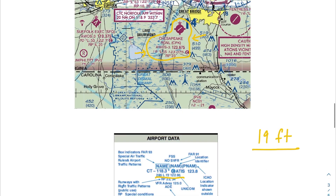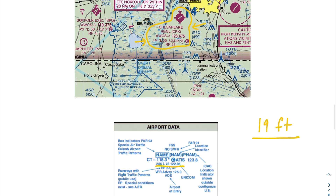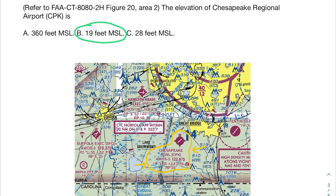We found it by pattern matching the airport data descriptor. Hopefully that helps when figuring out the elevation and altitudes of obstacles and airports on sectional charts. If you have any questions, feel free to leave a comment and I'll respond as quickly as I can. Hope you have a great rest of your day.